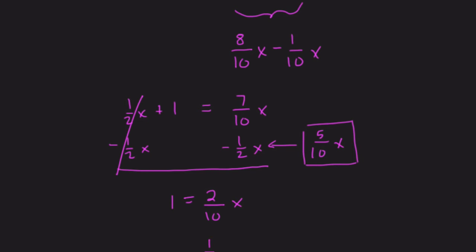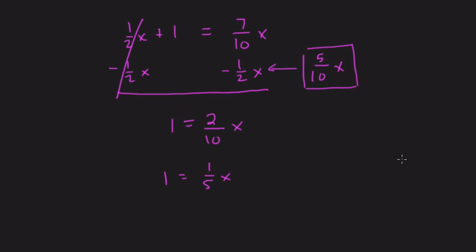We reduce 2 tenths to 1 fifth, and now we have 1 fifth X equals 1. And to solve here, I multiply both sides by 5 because we have a fifth, and I want to undo that by multiplying by the reciprocal. So 1 fifth times 5 is just 1, so we have 1 X, or just X, and X equals 5 times 1, or 5.